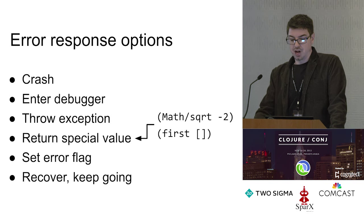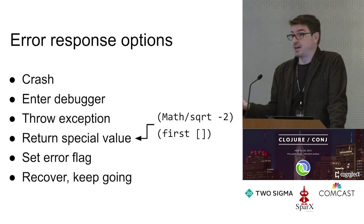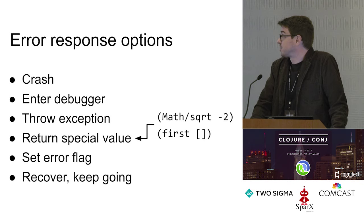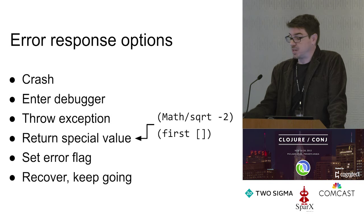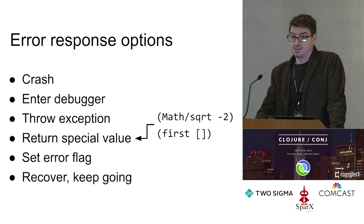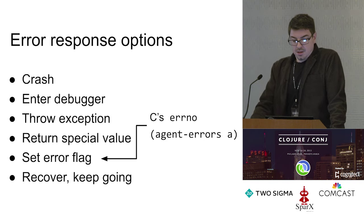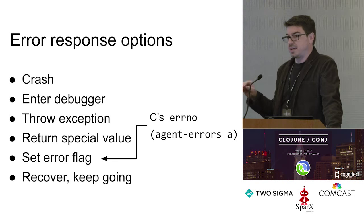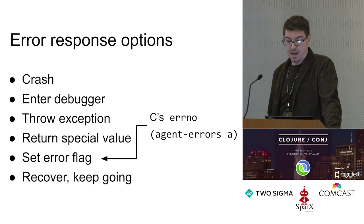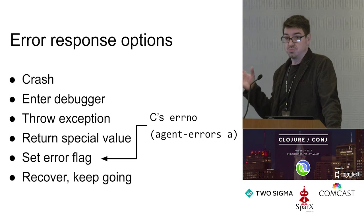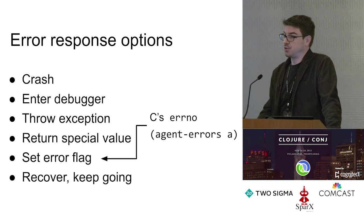Special return values is a broad category. Java and Clojure both do this — if you take the square root of a negative number, you get back NaN. Clojure uses this in a lot of places: if you take the first item of an empty collection, you'll get nil. The maybe monad's nothing value falls in this category as well. Setting an error flag — C's errno is a bit like this. Clojure's agents also use this: one error mode sets a flag inside the agent itself, and you can use agent-errors to check if there's an error waiting for you.